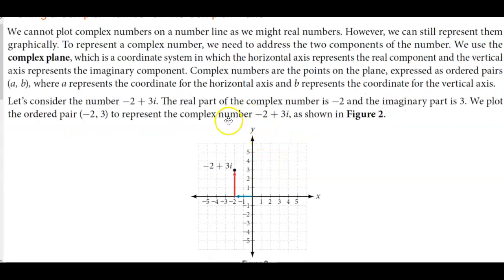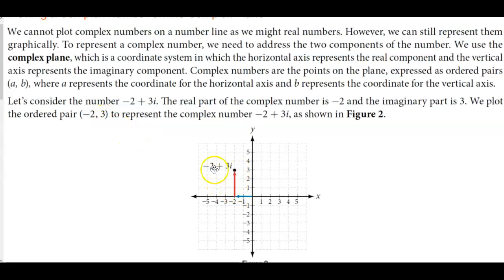We plot the ordered pair negative 2, 3 to represent the complex number negative 2 plus 3i. The real part is negative 2, so we start at 0 and move to the left 2 units. Then we use the second coordinate, which is positive 3, and move up 3 units. Therefore that point represents negative 2 plus 3i.